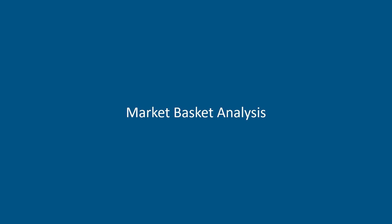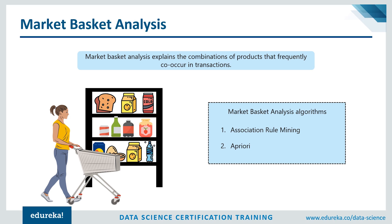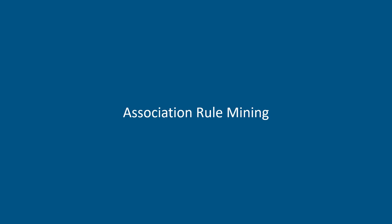Market basket analysis is a key technique used by large retailers to uncover associations between items — it identifies relationships between the items people buy. For example, people who buy bread also tend to buy jam, so marketing teams can target those customers and provide offers to encourage buying a third item like eggs. To find associations between items and make predictions about customer buying, there are two algorithms: association rule mining and the a priori algorithm.